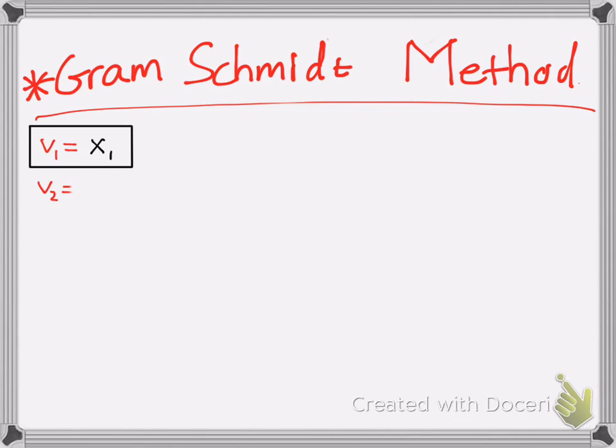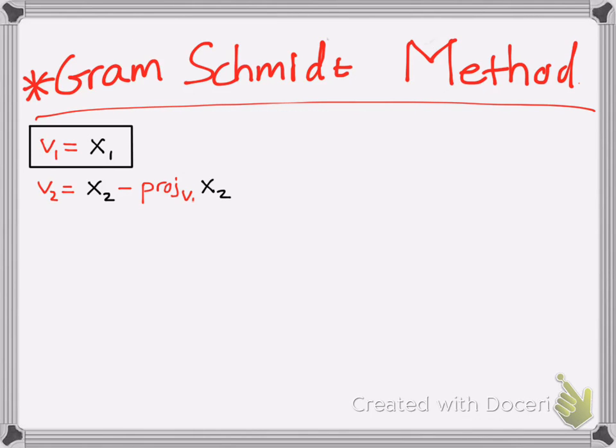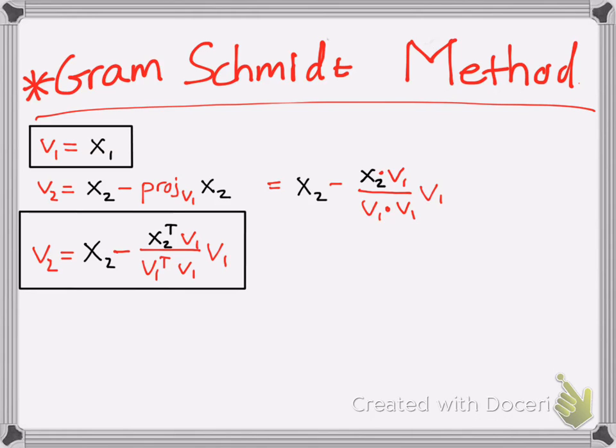So this is the method in doing so. You subtract the components off. So you take the projection of v1, which we're defining as the first vector x1 here, and you subtract it off. The way you do that is by doing the dot product. Another way of writing the dot product is simply doing the transpose, because that's what's great about linear algebra.